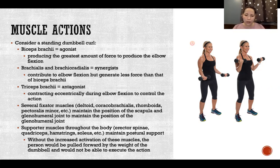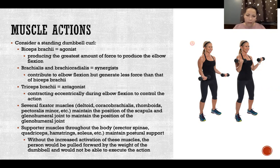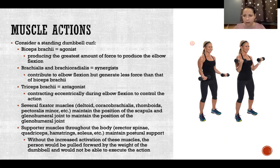Triceps brachii is the antagonist because it's contracting eccentrically during elbow flexion, controlling the action. Then we have fixator muscles such as deltoid, coracobrachialis, rhomboids, and pec minor — just a few examples. They're acting to maintain the position of the scapula and glenohumeral joint.